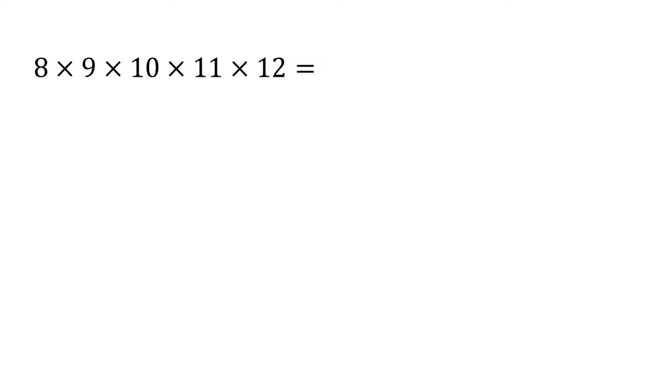The first thing to remember when multiplying like this is that it doesn't matter which order we multiply things together in. For example, 8 × 9 × 10 is the same as 9 × 10 × 8.